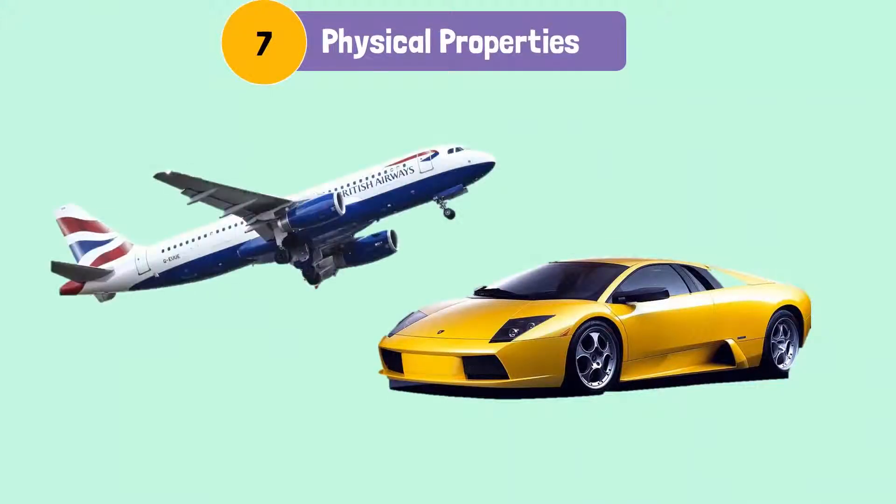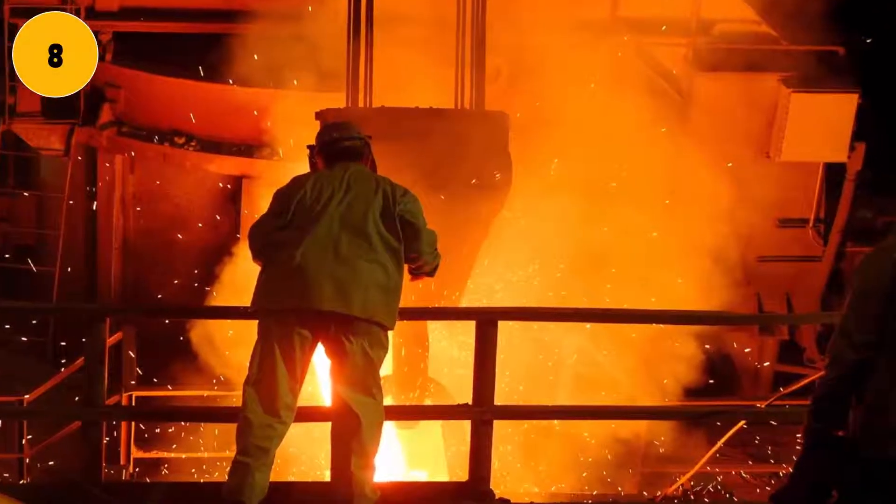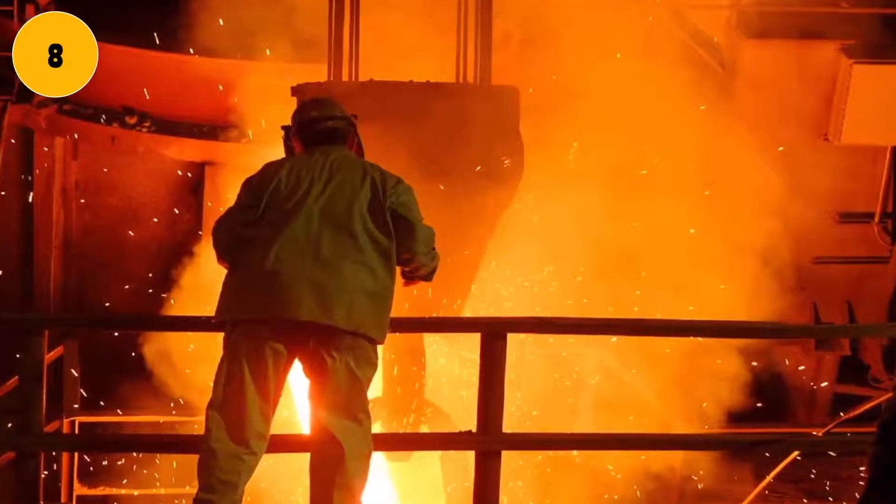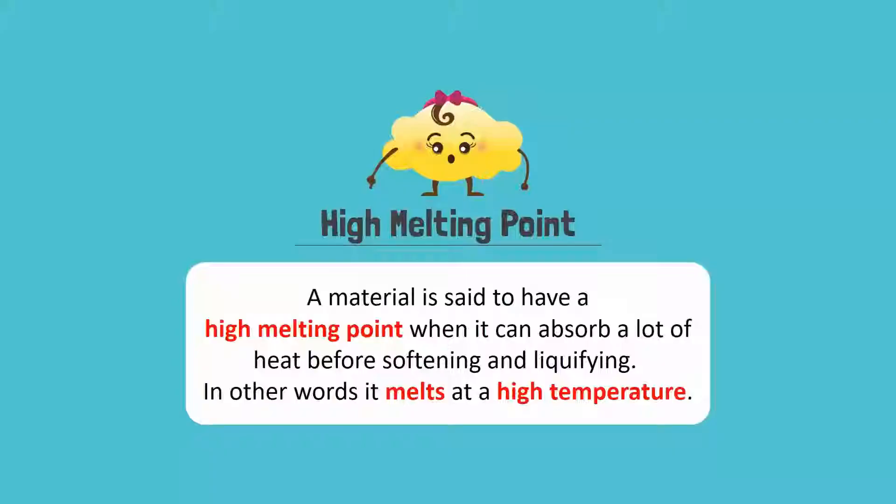Metals are also used in making cars, airplanes or in factories for machinery because they have high melting points. A material is said to have a high melting point when it can absorb a lot of heat for softening and liquefying. In other words, it melts at a high temperature.